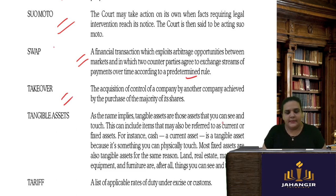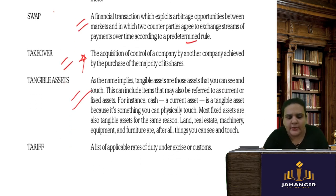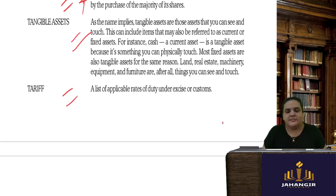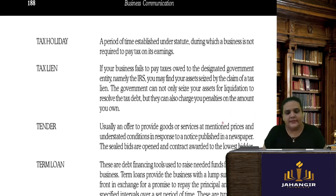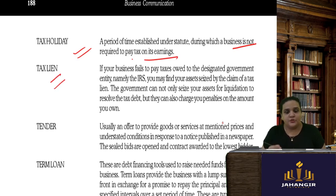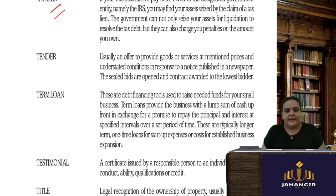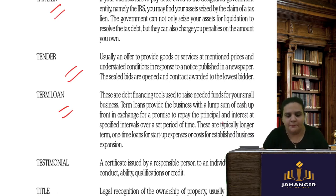A takeover is when one company purchases another company. Tangible assets are those which you can see and touch. A tariff is a list of applicable rates. Tax holidays mean a business is not required to pay tax on its earnings for a period. A tax lien occurs when a business fails to pay taxes owed — assets may be seized to clear the claim. A tender is an offer to provide goods and services at a given price or condition. A term loan is fixed for a term of 10 or 15 years, with regular EMI payments.